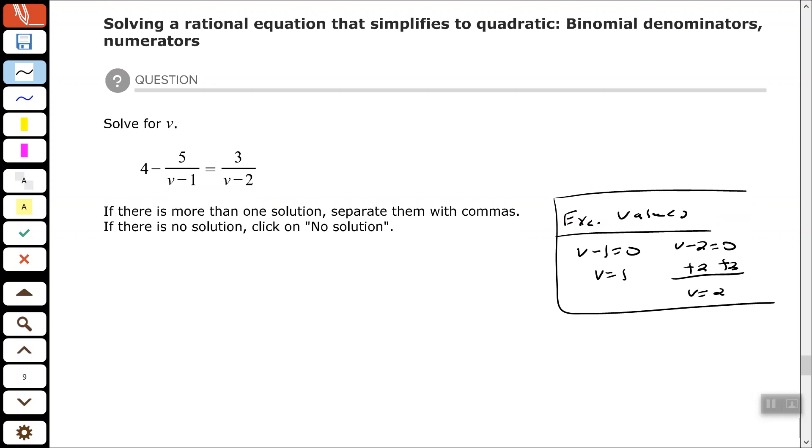So V minus 1, V minus 2 is also my least common multiple of my denominator. So I'm going to multiply both sides by V minus 1 times V minus 2.